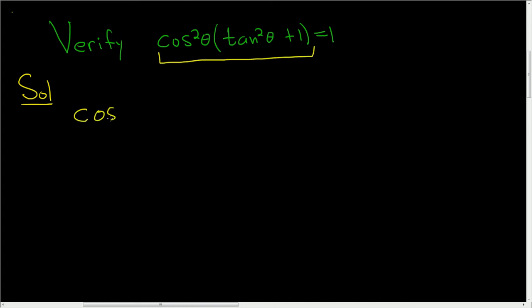So cosine squared theta times tangent squared theta plus 1. This is equal to cosine squared theta. Now tangent squared plus 1 is secant squared, so this is secant squared theta.